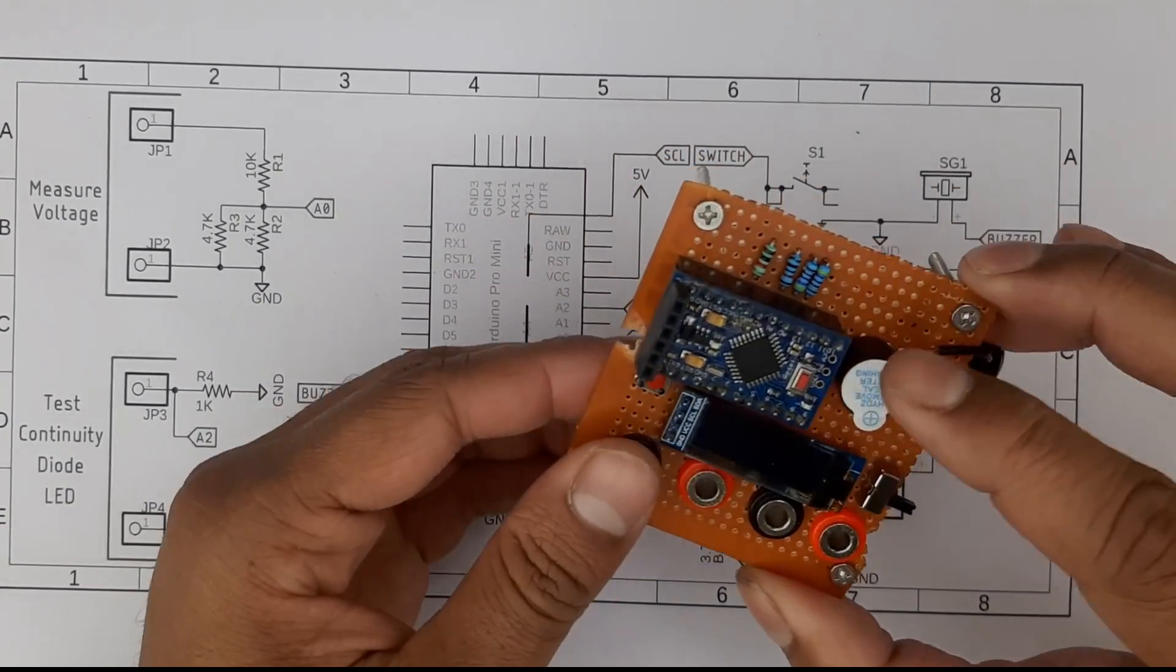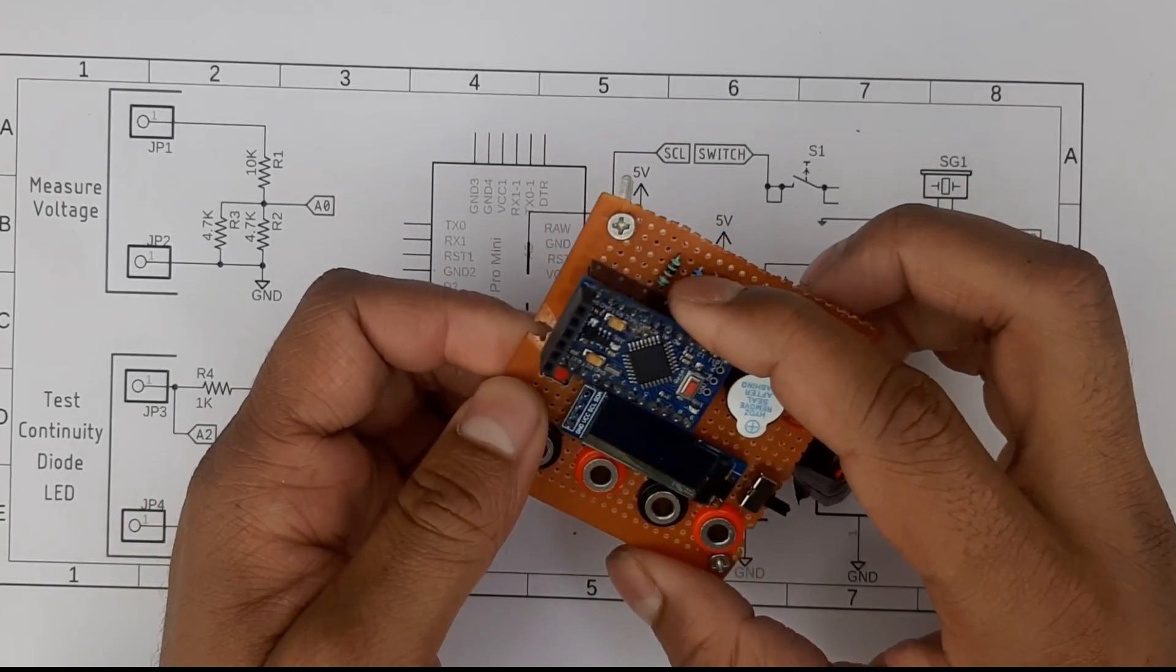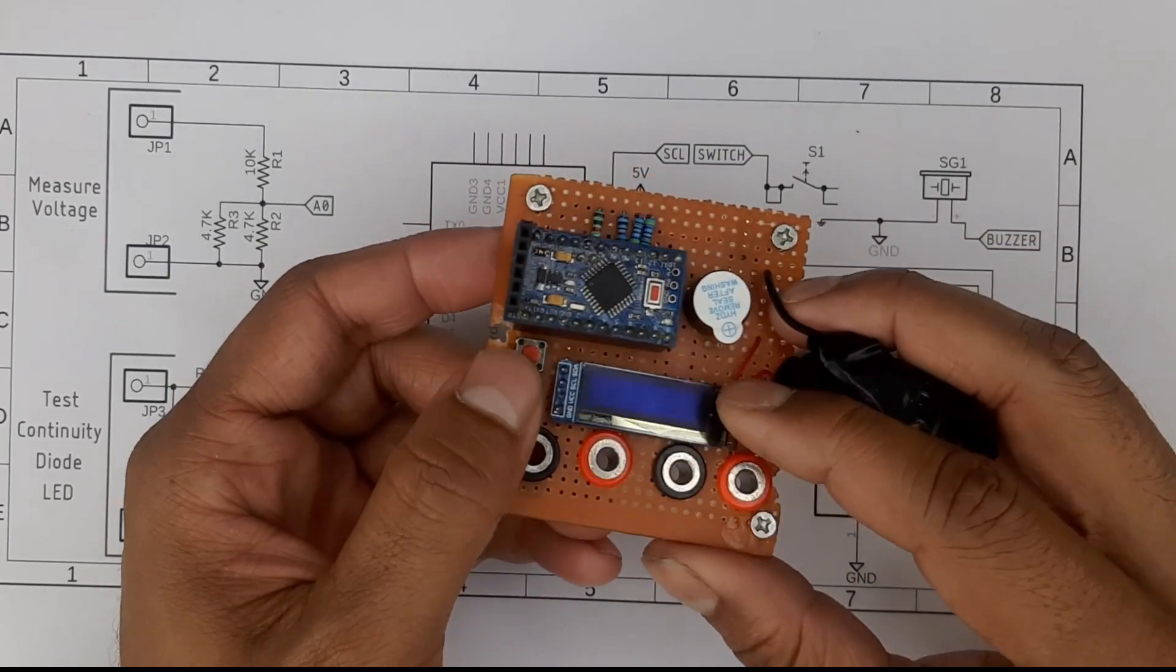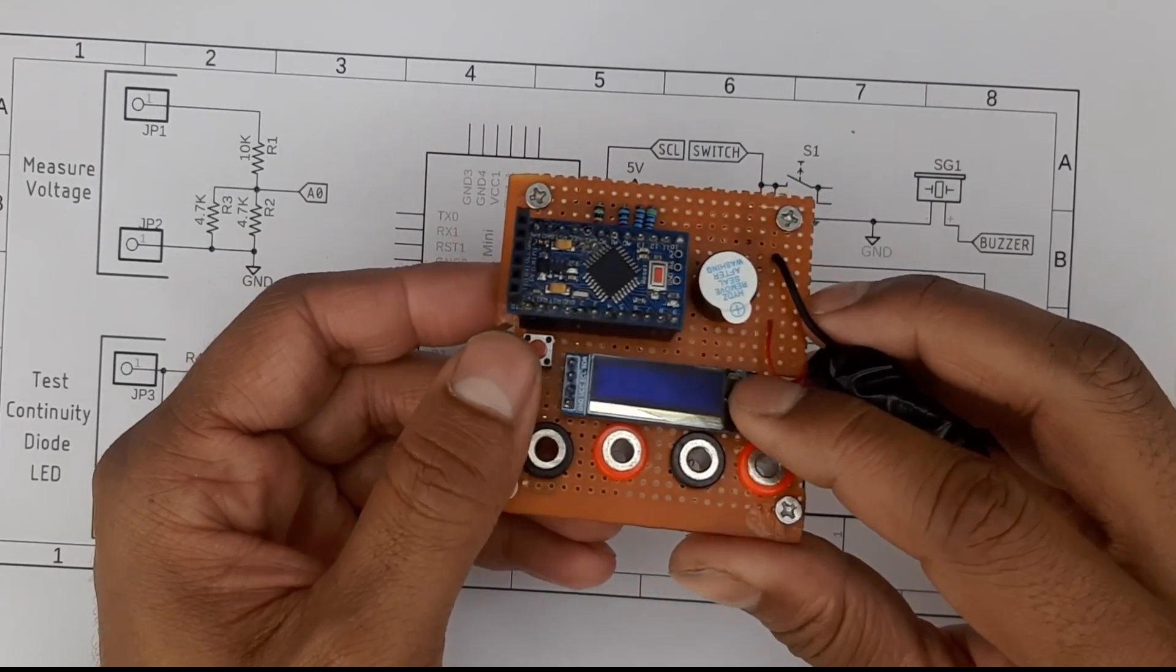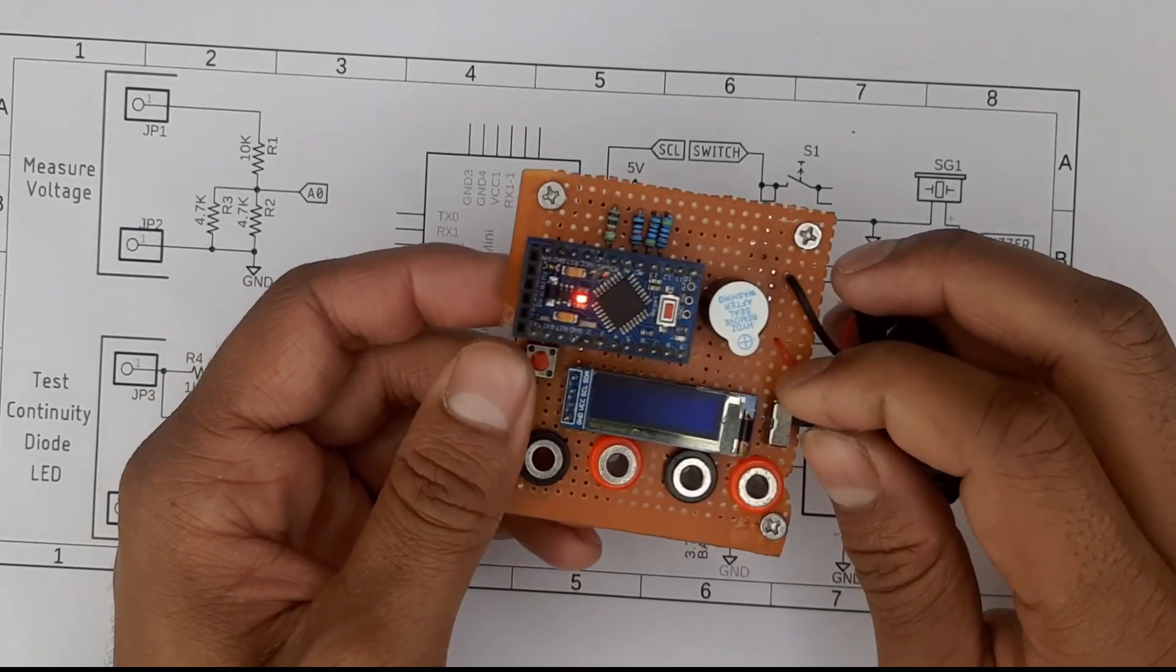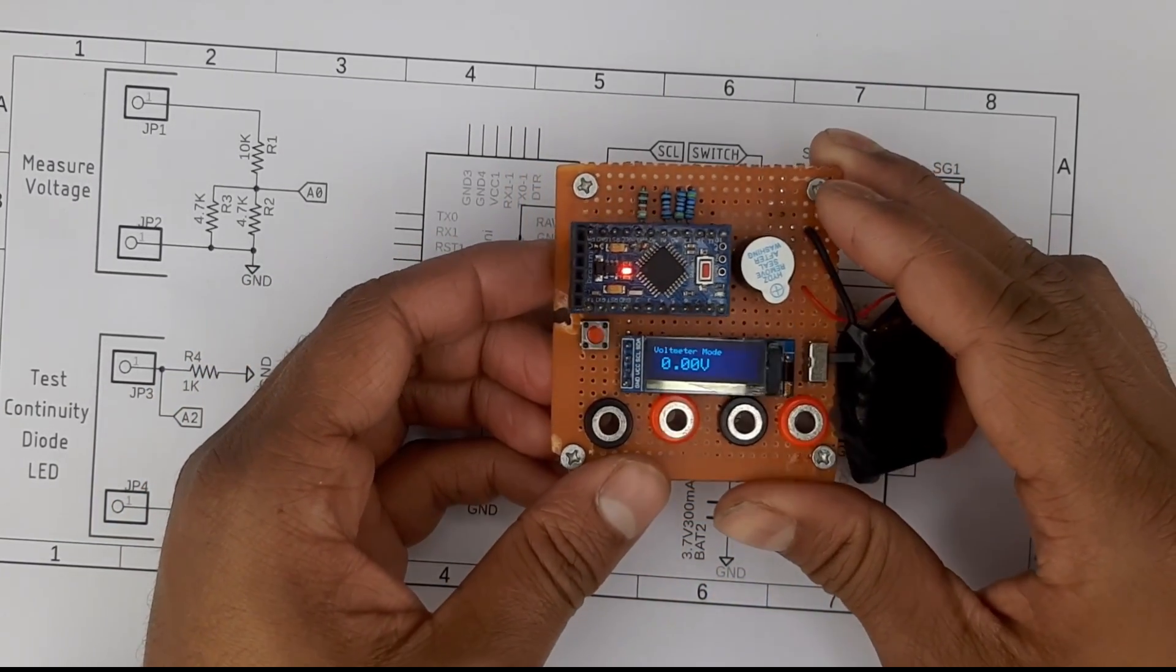As you can see this is the circuit. We have our Arduino Pro Mini, our resistor, our battery, our buzzer, our select switch, the display, and a toggle switch to turn the thing on and off. As you can see I've just turned it on and you can see it is in voltmeter mode.